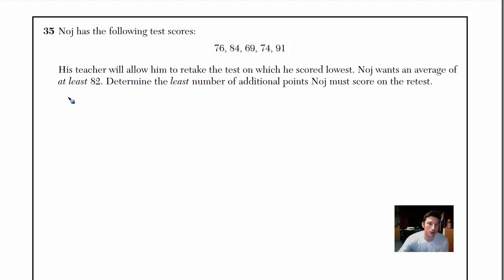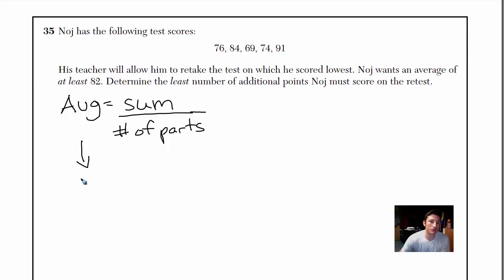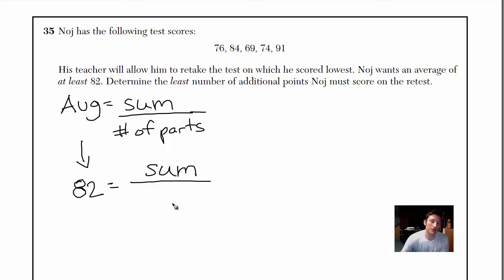To solve this, let's start by writing the formula for an average. An average equals the sum of the parts divided by the number of parts. In this example, he wants the average to be 82, so I'll write: 82 equals sum divided by 5, because we already know he has five test grades.